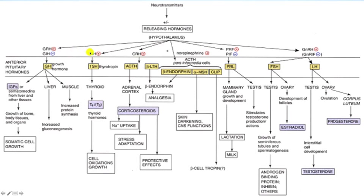The other hormone from the acidophils came from the lactotrophs — this was prolactin. Prolactin was stimulated by prolactin releasing factor, also known as TRH (thyrotrophin releasing hormone), which came from the paraventricular nuclei. It was inhibited by prolactin inhibiting factor, also known as dopamine, which came from the arcuate nuclei. Once produced, prolactin goes to the mammary gland to lead to milk synthesis. In males, it also goes to the testis and stimulates testosterone production.